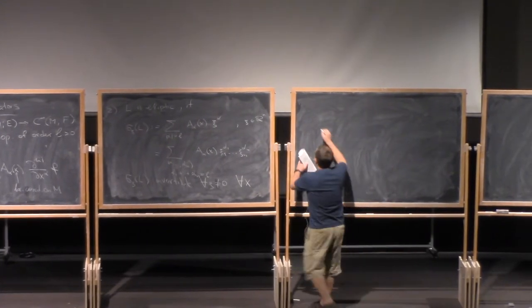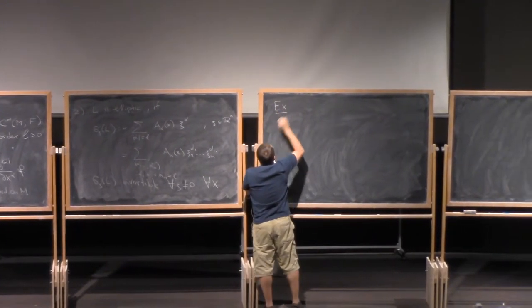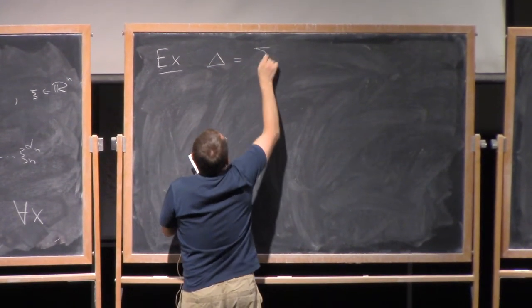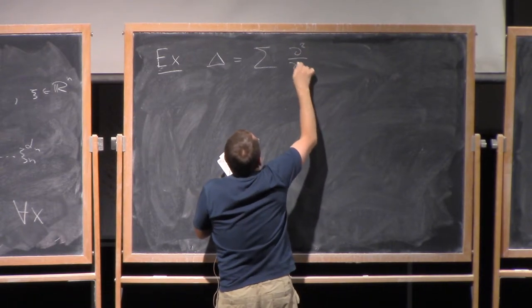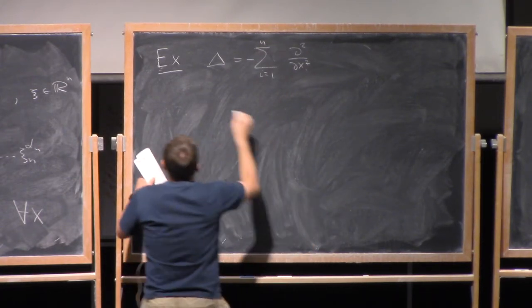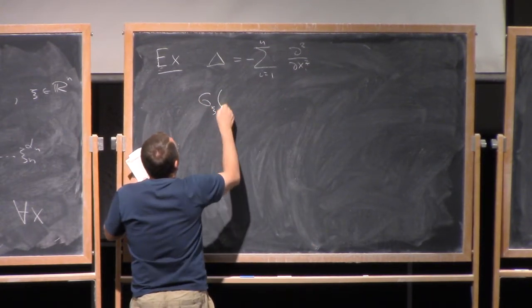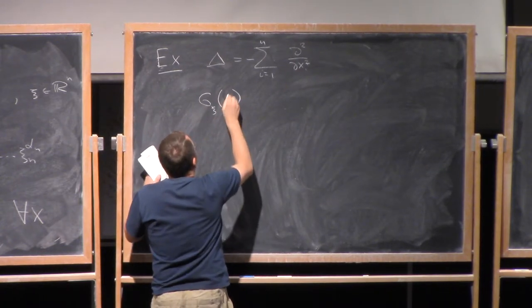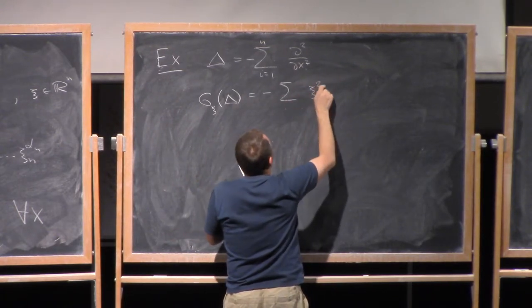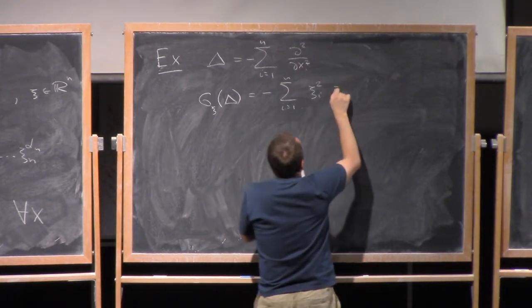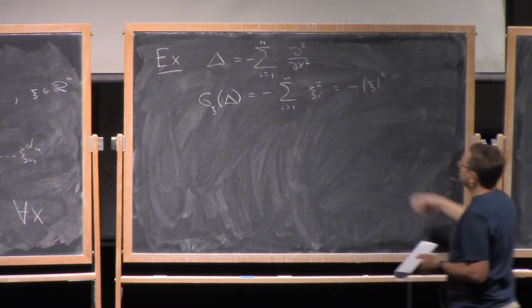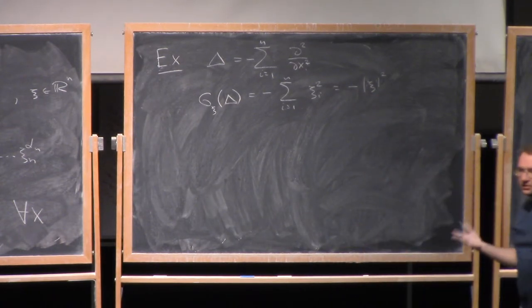So here is one example. If you take the Laplacian on R^n, that is just the sum of d² / dx_i squared, when i is from 1 to n, there's a minus sign. So the principal symbol of this operator Δ is just minus sum ξ_i squared. And this is nothing else but just the squared norm of ξ with a minus sign. So clearly, if ξ is non-zero, this is non-zero, so we can invert numbers.